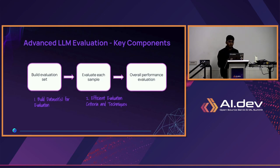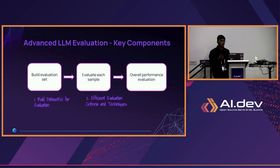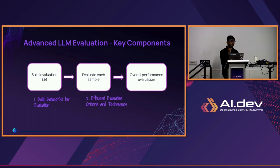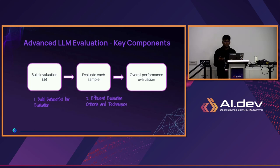Now the exciting part: advanced LLM evaluation key concepts. We start with building an evaluation set. If you're building an LLM application for your organization, you have a set of goals — what your app needs to answer and what the correct responses should look like. You start by manually creating a basic evaluation set: you provide prompts, possible answers, and create hundreds of sample responses. Then you evaluate each sample. Once the set is ready, you can automate the evaluation process.